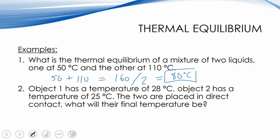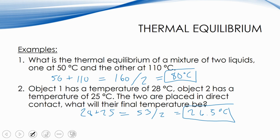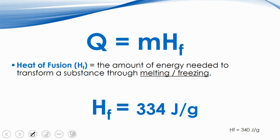For the second example, object one is at 28°C and object two is at 25°C. 28 plus 25 equals 53, divided by two gives a final temperature of 26.5°C. Thermal equilibrium calculations are pretty straightforward. Now that we've covered this, let's talk about the equations we're going to use — I'll refer back to the heating curve in just a moment, but I want to cover the equations first.